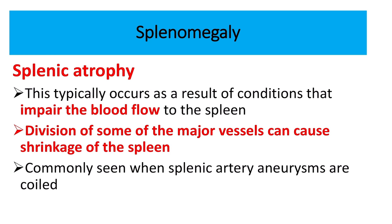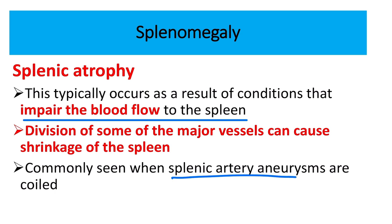There is also a condition known as splenic atrophy, which typically occurs as a result of conditions that impair blood flow to the spleen. When blood flow is impaired, the spleen can shrink or be destroyed. This is commonly seen after a splenic artery aneurysm is coiled.